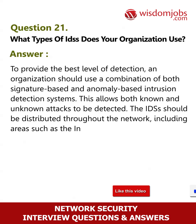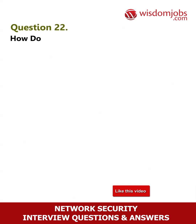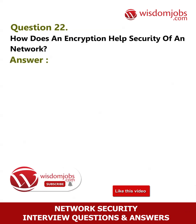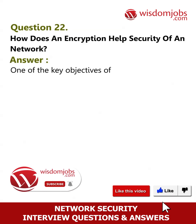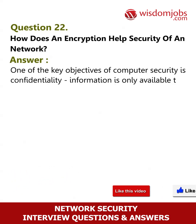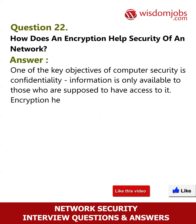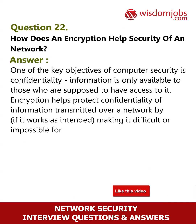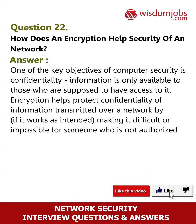Question 22: How does encryption help security of a network? One of the key objectives of computer security is confidentiality — information is only available to those who are supposed to have access to it. Encryption helps protect confidentiality of information transmitted over a network by making it difficult or impossible for someone unauthorized to make sense of intercepted data in transit.